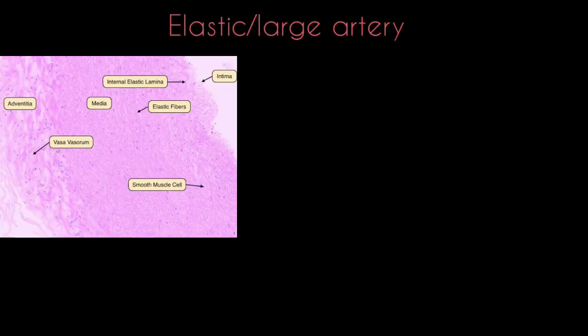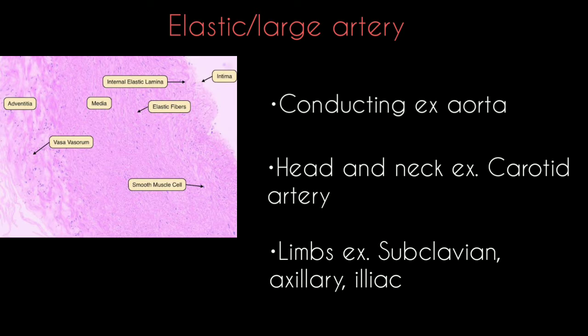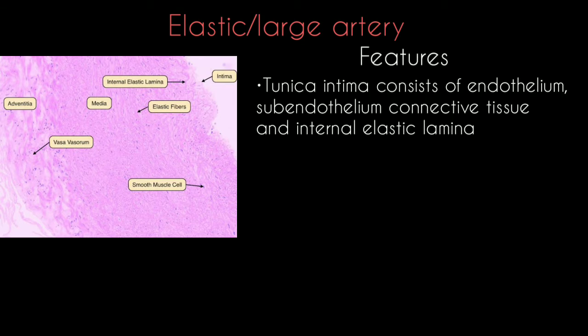We will look at histology slides identification, starting with the cardiovascular system. Elastic arteries are also called large or conducting arteries. They supply the head and neck — example: carotid artery — and limbs — example: subclavian, axillary, and iliac artery.